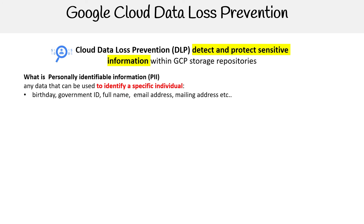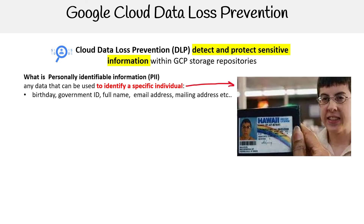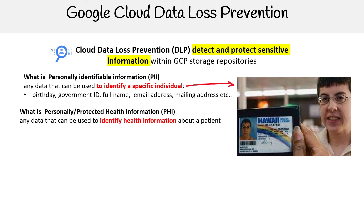We're looking at personally identifiable information — PII — any data that can be used to identify a specific individual. A really great example here is McLovin from a movie from 10 years ago. He has a fake ID here, but it gets the point. We're talking about driver's licenses, government IDs, passports, email addresses, mailing addresses, birthdays — any of that kind of personally identifiable information.